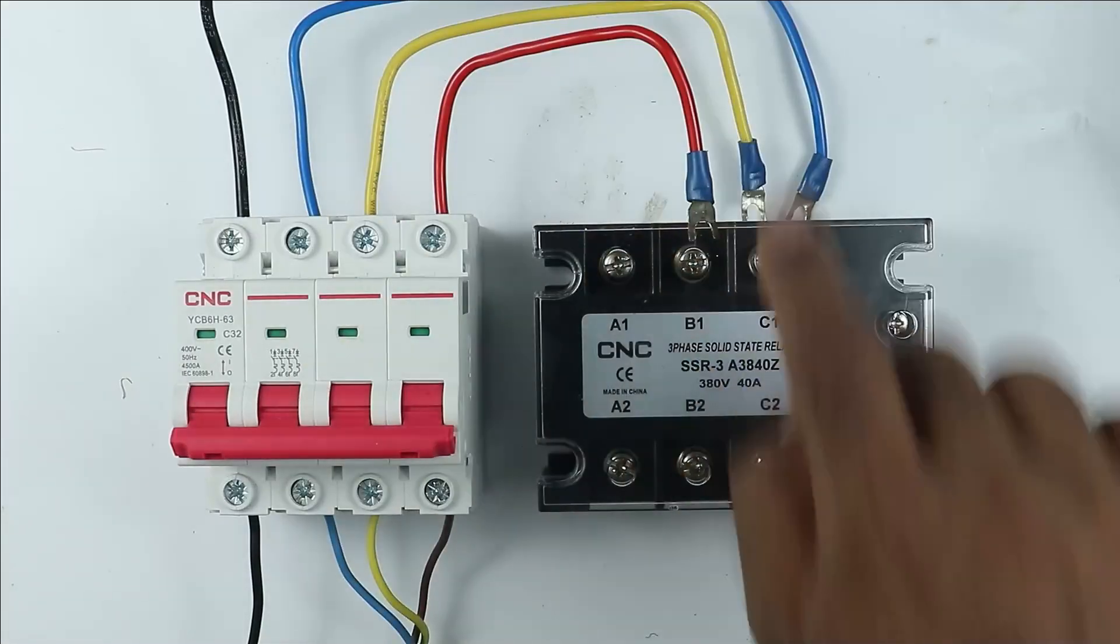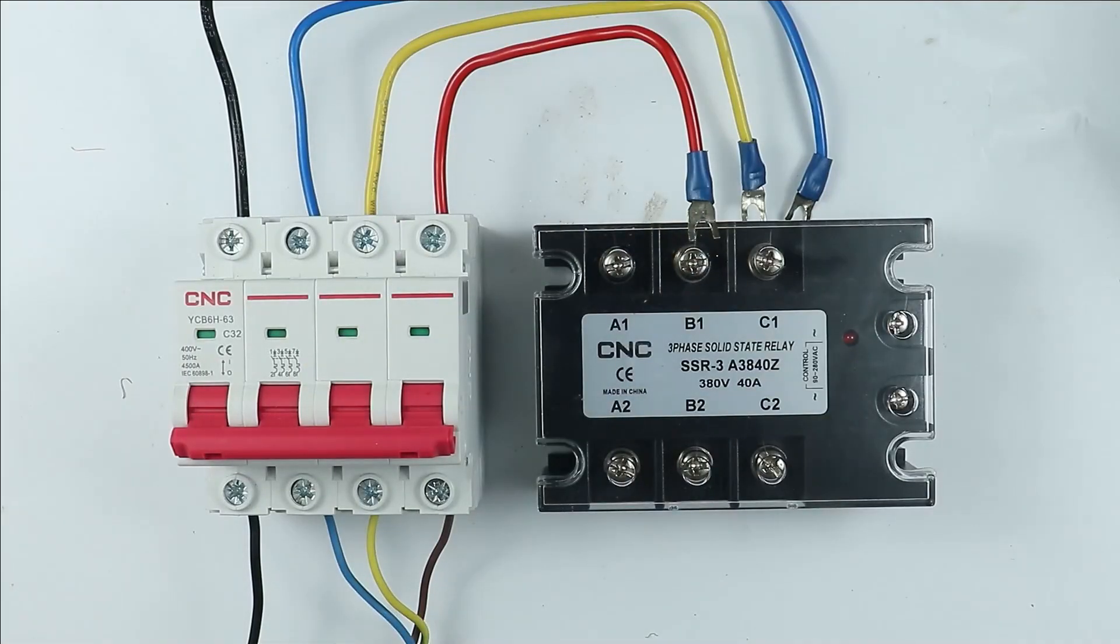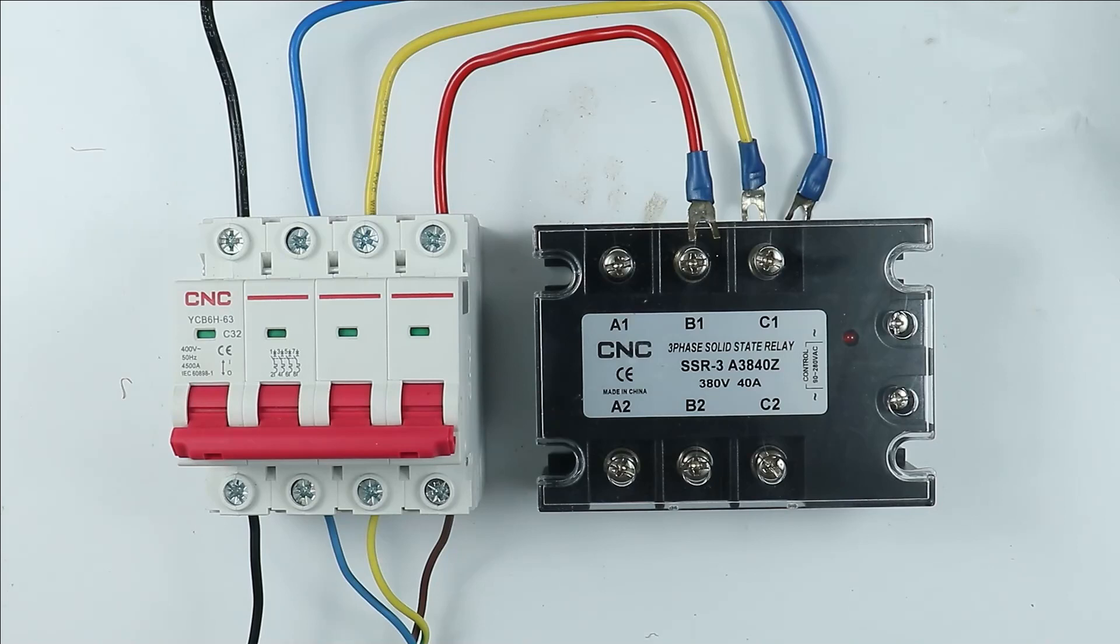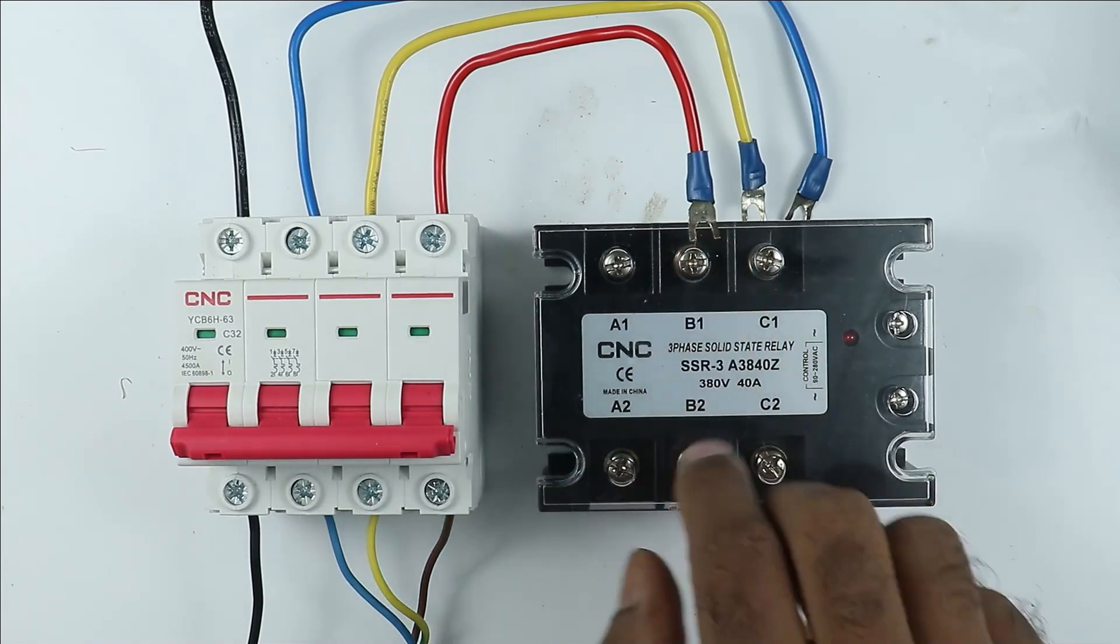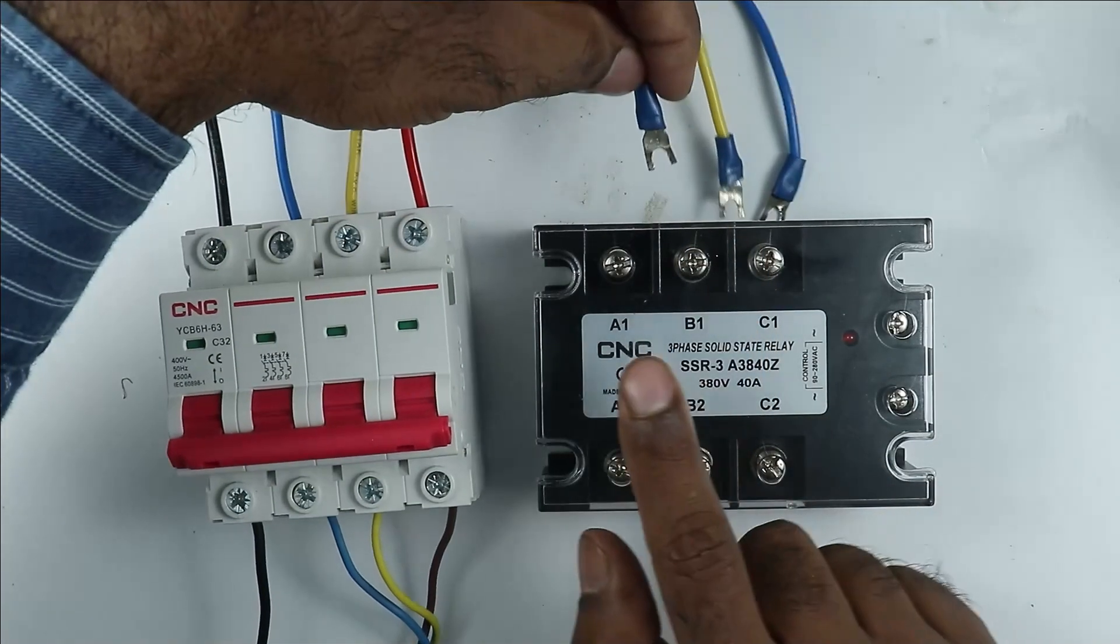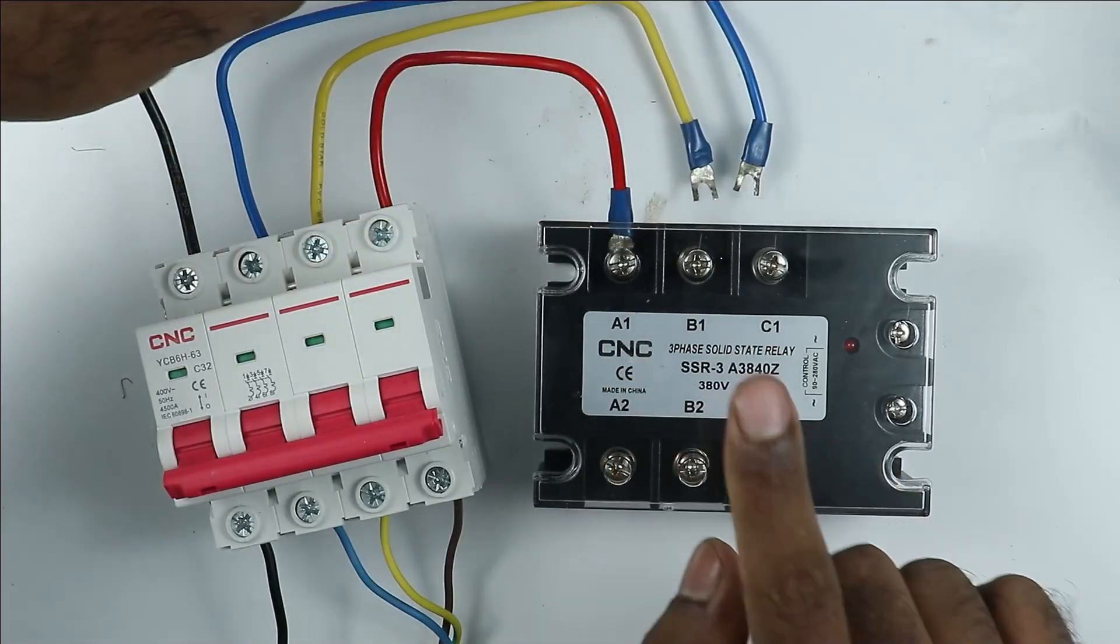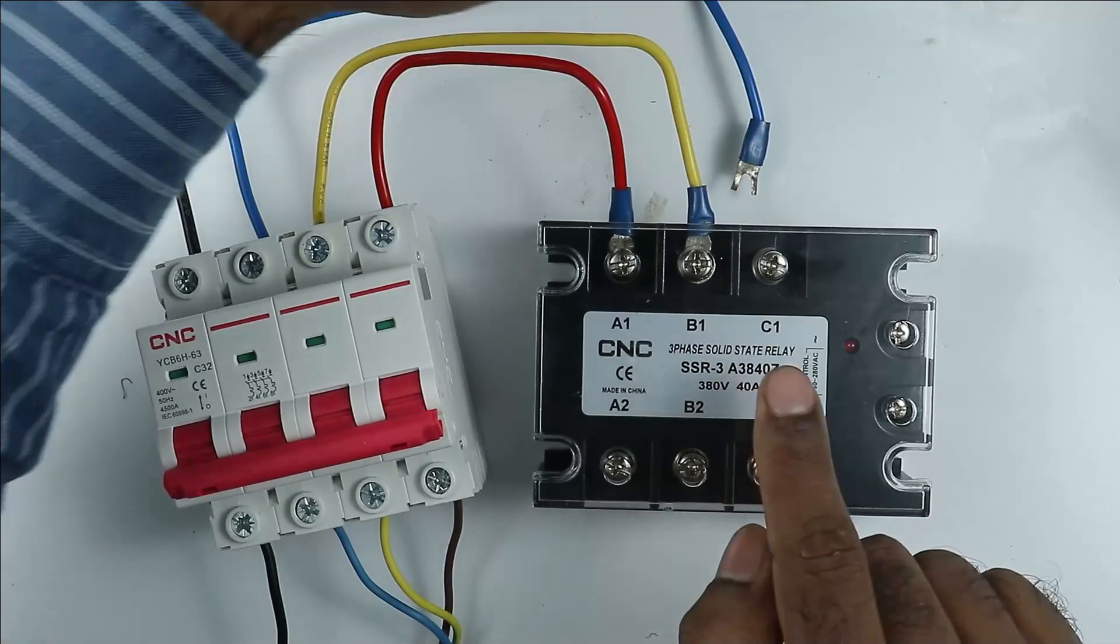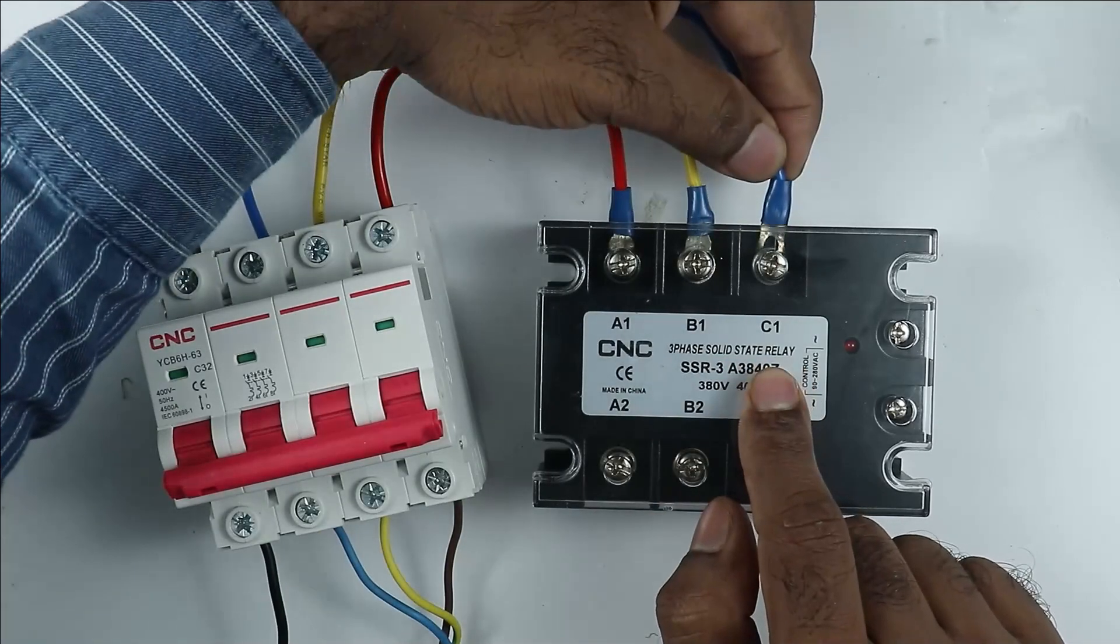First let us discuss about the power wiring of this relay. To perform power wiring what you have to do simply is the three phase incoming power supply you have, among the three, the R phase power supply, take the R phase supply and connect with A1 terminal. At B1 terminal connect Y phase power supply and at C1 terminal you have to connect B phase power supply.